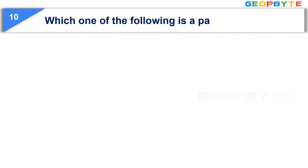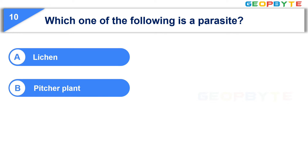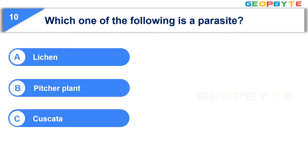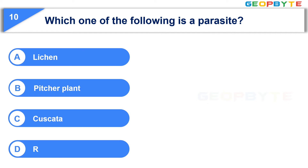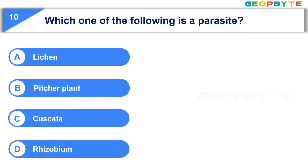Moving to the tenth question: Which one of the following is a parasite? Option A: Lichen. Option B: Pitcher plant. Option C: Cuscuta. Option D: Rhizobium. Your time starts now. Your time is up and the correct answer is Option C: Cuscuta.